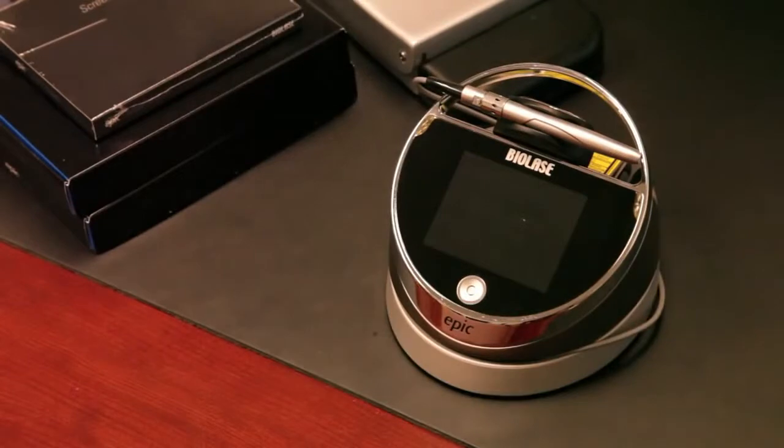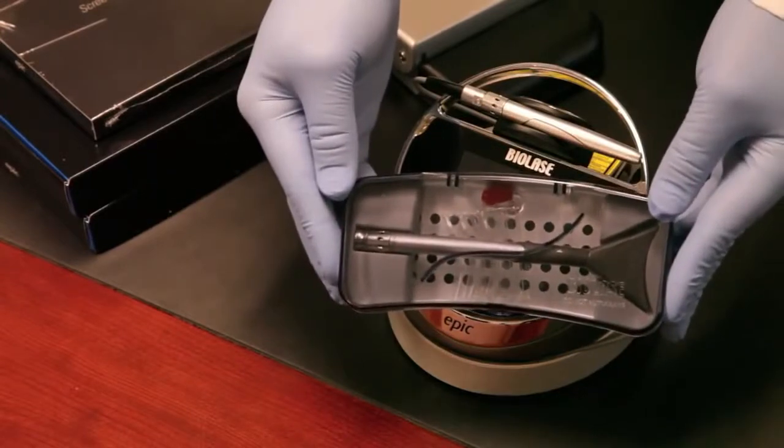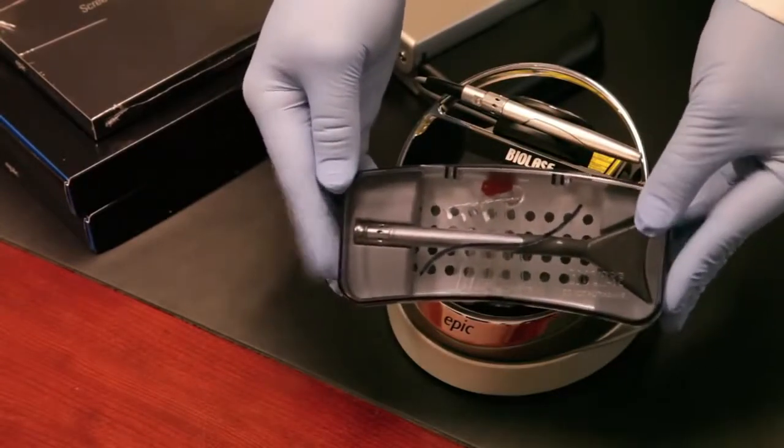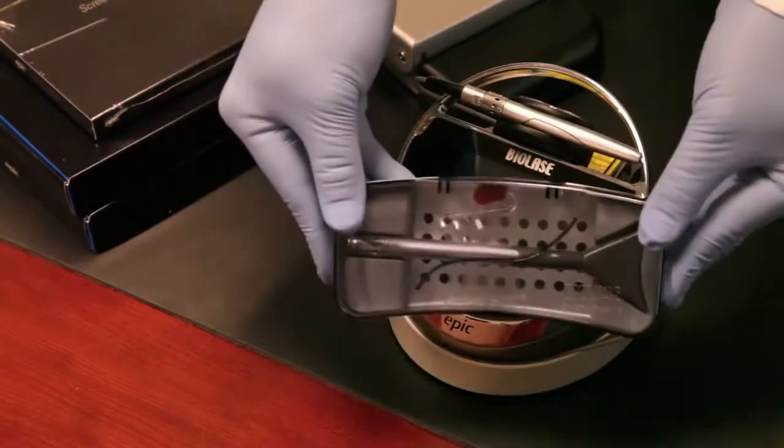If you order our whitening package, you will also receive in addition to the two handpieces a whitening handpiece. It looks just like this and will attach to the handpiece. We'll show this in a few minutes as well, what it looks like and how it works for performing tooth whitening with your Epic laser.